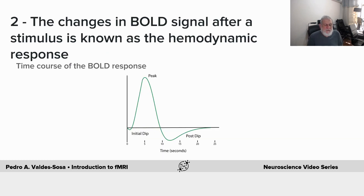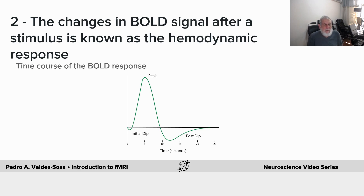If we look at the MRI signal over time, we see that it peaks a few seconds after neural activation. People describe an initial dip — an initial decrease of the signal — and then there's a post dip. This hemodynamic response is the response at the basis of fMRI.